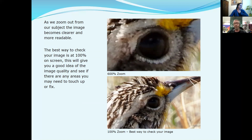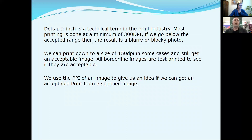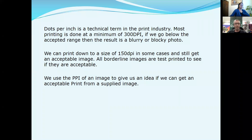There's our final image of the bird in the grass, which is lovely — that was one of the images picked last year. Dots per inch is a technical term in the print industry and most printing is done at a minimum of 300 DPI. If we go below that accepted range, the result can be a blurry, blocky, or pixelated photo. We can print down to 150 DPI in some cases and still get an acceptable image, because our large format printers print in eight different colors — light magenta, red, and others — that fill in gaps missing from a regular CMYK print process.